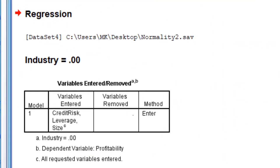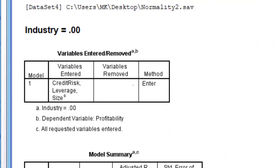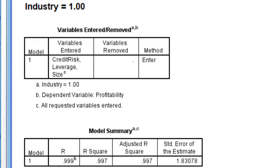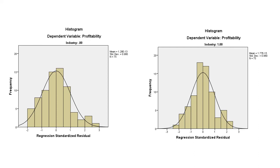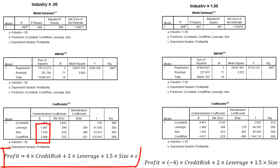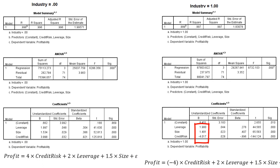For example, this section shows the regression results for Industry = 0 and this section shows the results for Industry = 1. Now our residuals are approximately normally distributed and the two regression models are statistically significant. Further, the coefficients are almost equal to the expected values, meaning this time the regression analysis has estimated the coefficients more accurately than in the previous case.